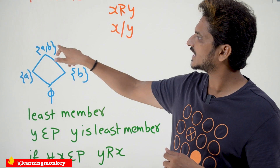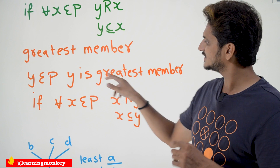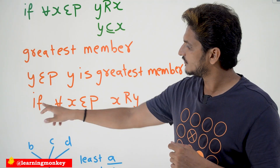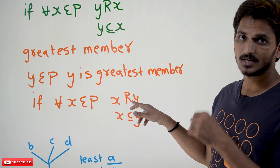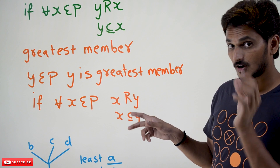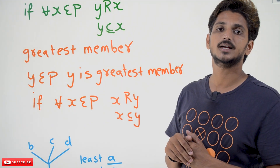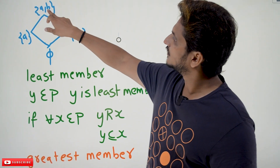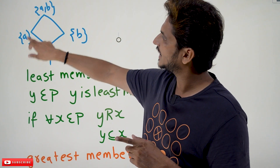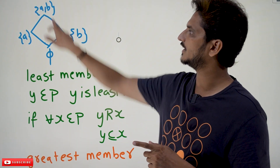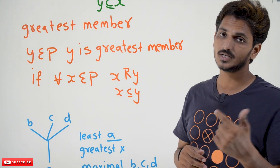Similarly, greatest member: {A,B} we call the greatest member. Y belongs to the poset P; Y is the greatest member when, for all X belonging to P, it satisfies X relates Y — meaning X ⊆ Y. All elements below Y must satisfy the relation. In our example: A ⊆ {A,B}, B ⊆ {A,B}, Φ ⊆ {A,B} — for all X, it satisfies X relates Y. Then only you say it is the greatest member.